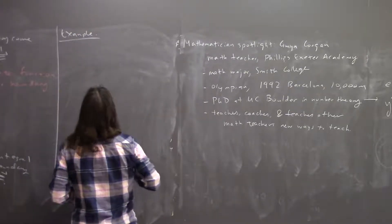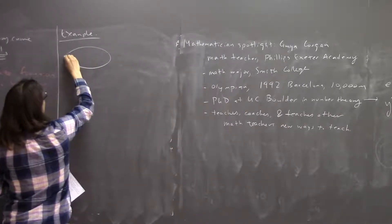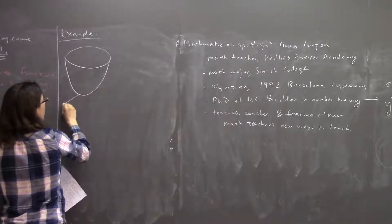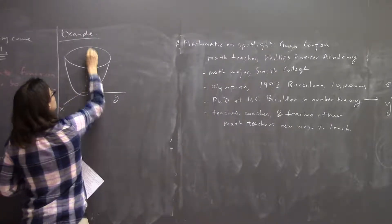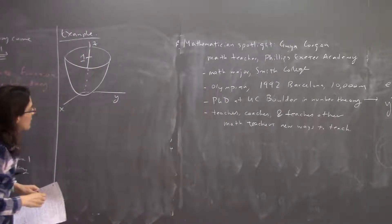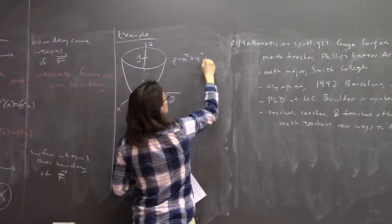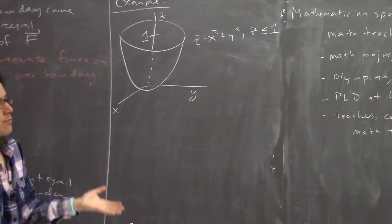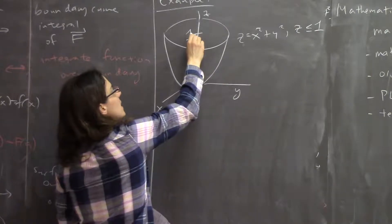Suppose you have a piece of a paraboloid. This is the paraboloid z = x² + y², where z ≤ 1. So it's our usual paraboloid but we chop it off at z = 1. This is our surface S, and let's orient it outward.